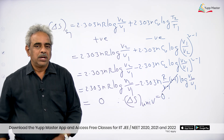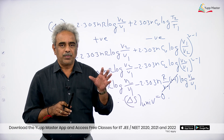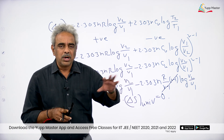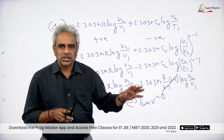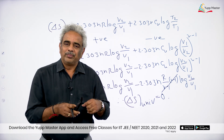In conclusion, in any adiabatic reversible process: ΔS_surroundings = 0, ΔS_system = 0, and ΔS_total is also 0.